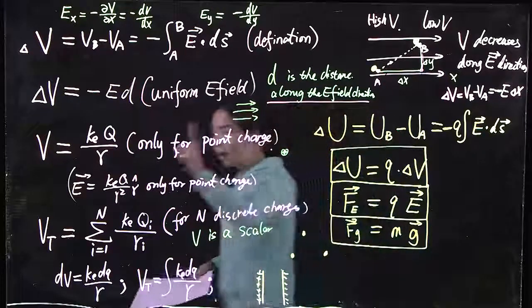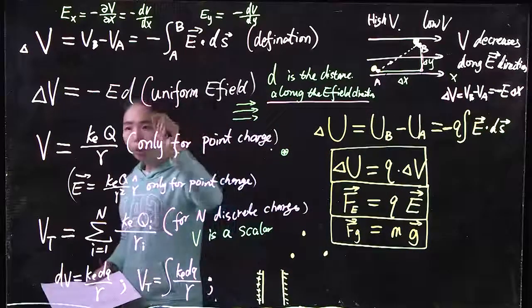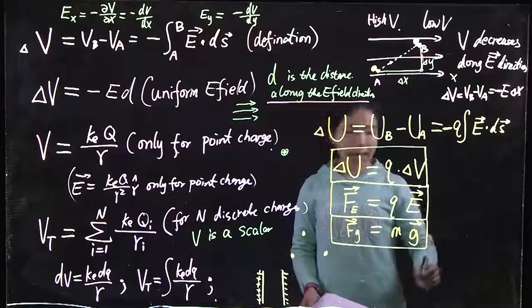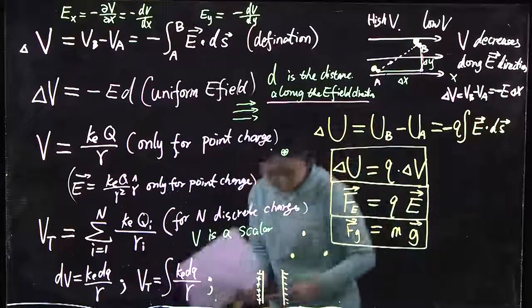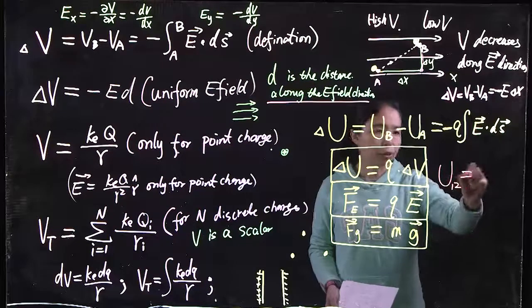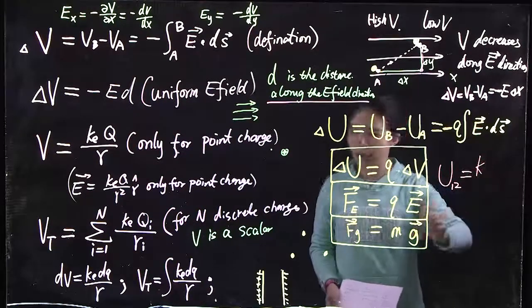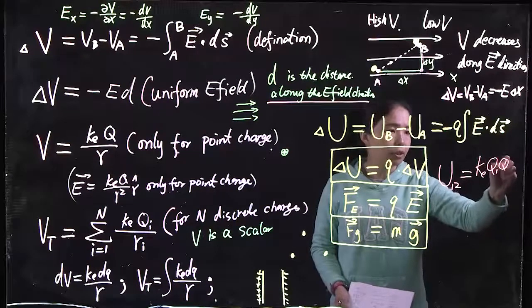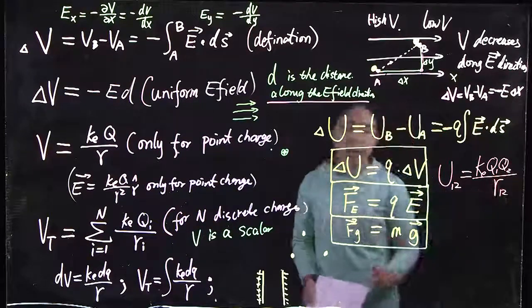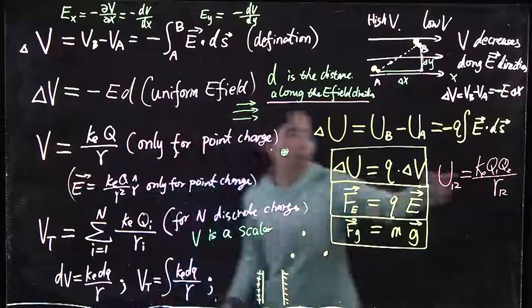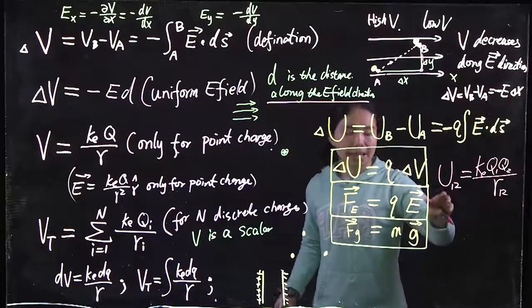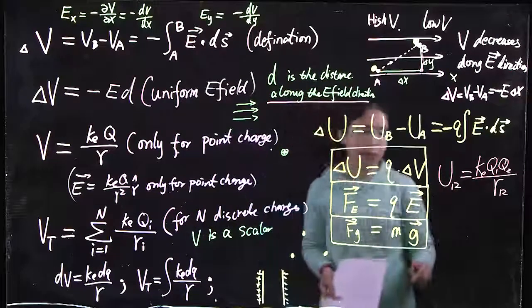If we have one point charge, it has a certain potential. Corresponding to that, we have U12. Only if you have two charges can you have a pair of charges. Q1, Q2 over R between one and two. You use the potential created by one charge and multiply by the other charge to figure out the potential energy between a pair of charges.